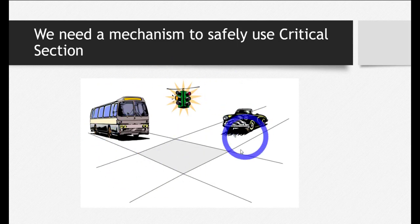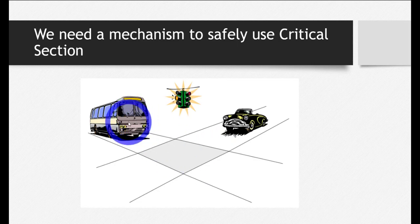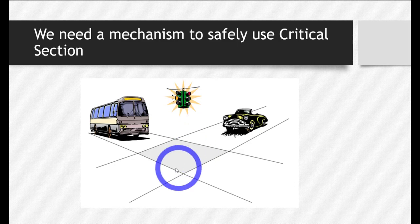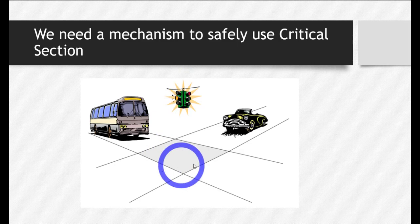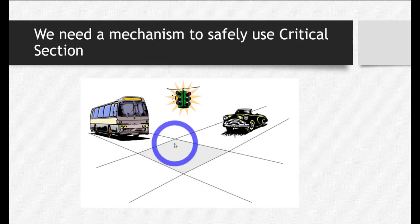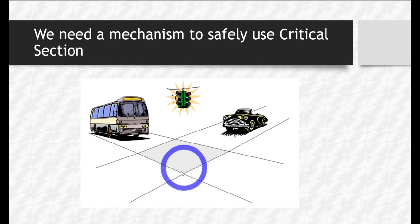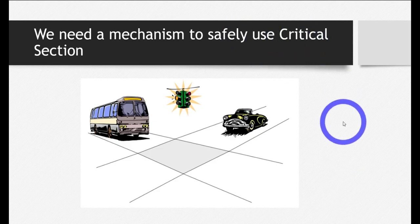Now let's see this whole scenario in terms of the operating system. This common section is the critical section, and these vehicles are the processes trying to use this common section at the same time. A critical section is a resource that two or more processes try to use at the same time. We need a mechanism to use this critical section safely — to achieve mutual exclusion — so that two or more processes do not attempt to use it at the same time, and only one process can access it at a time.